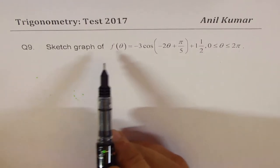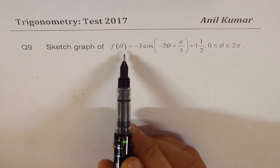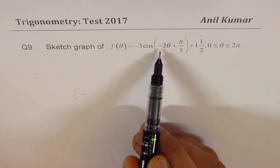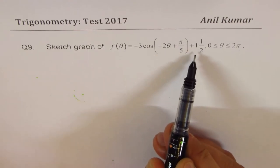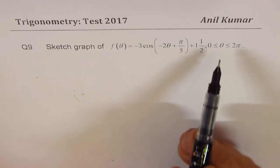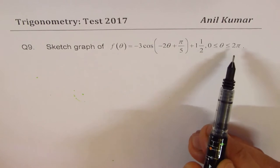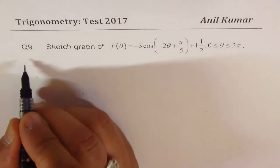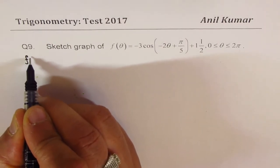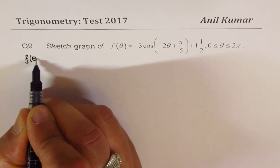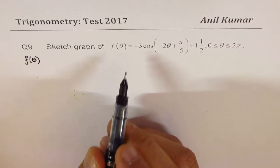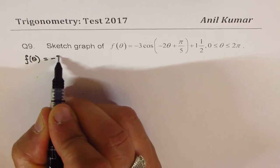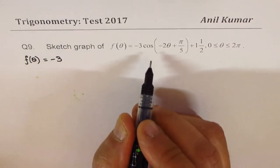Number nine: sketch the graph of f(θ) = -3cos(-2θ + π/4) + 1.5, where θ is between 0 and 2π. We had this earlier as question number six. Now we are going to sketch this particular function. First, let me rewrite this function in a very familiar way.